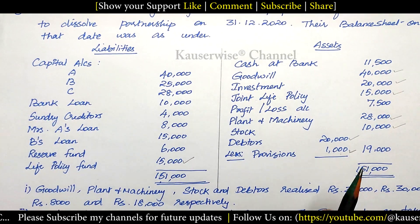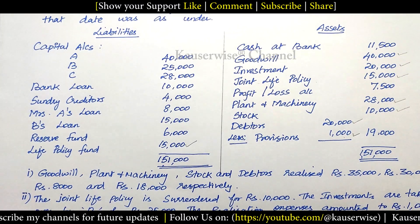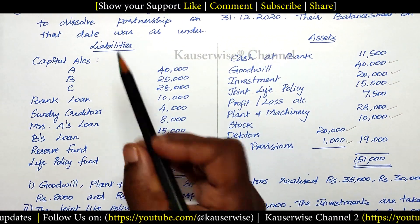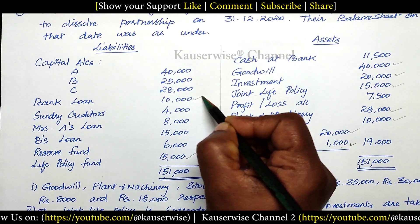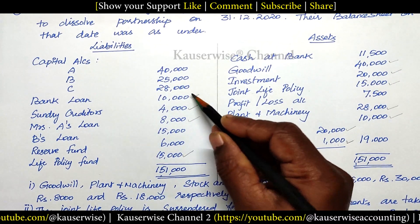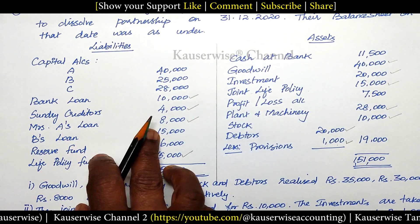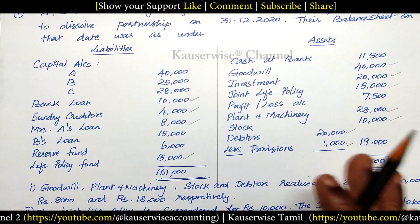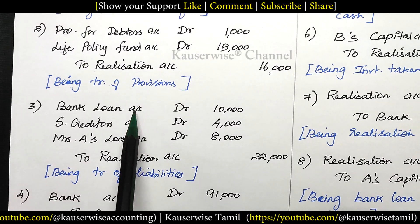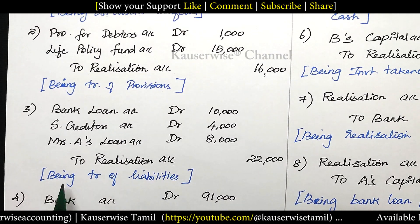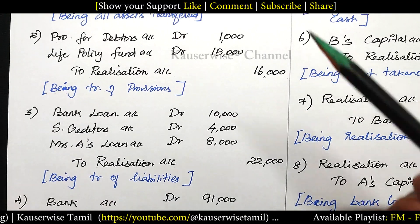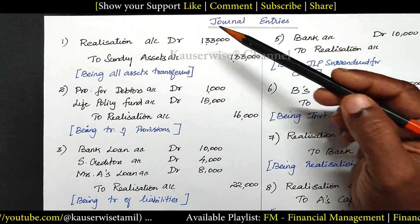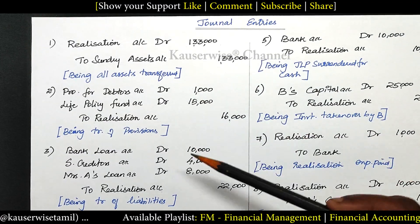The next step, after closing all assets and provisions, is to transfer all third-party liabilities to realization account. The third-party liabilities in this problem are: bank loan, sundry creditors, and Mrs. A's loan. Journal entry: All third-party liabilities accounts Dr. to Realization Account — being transfer of liabilities. These are the three important entries to transfer assets, provisions and third-party liabilities.